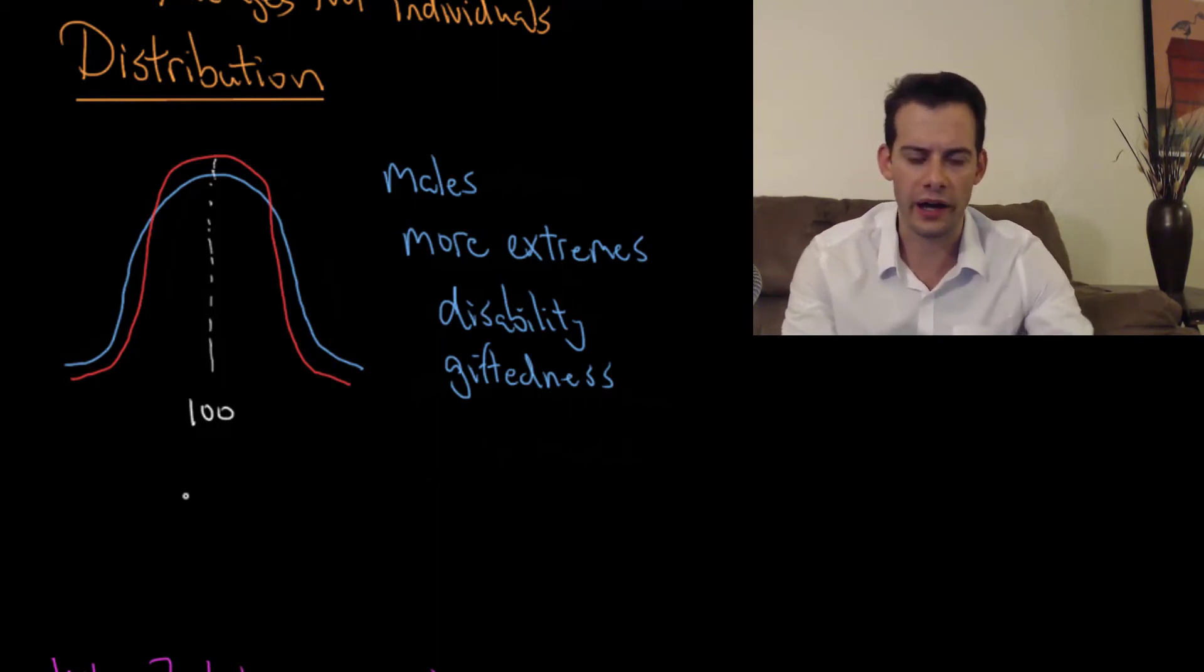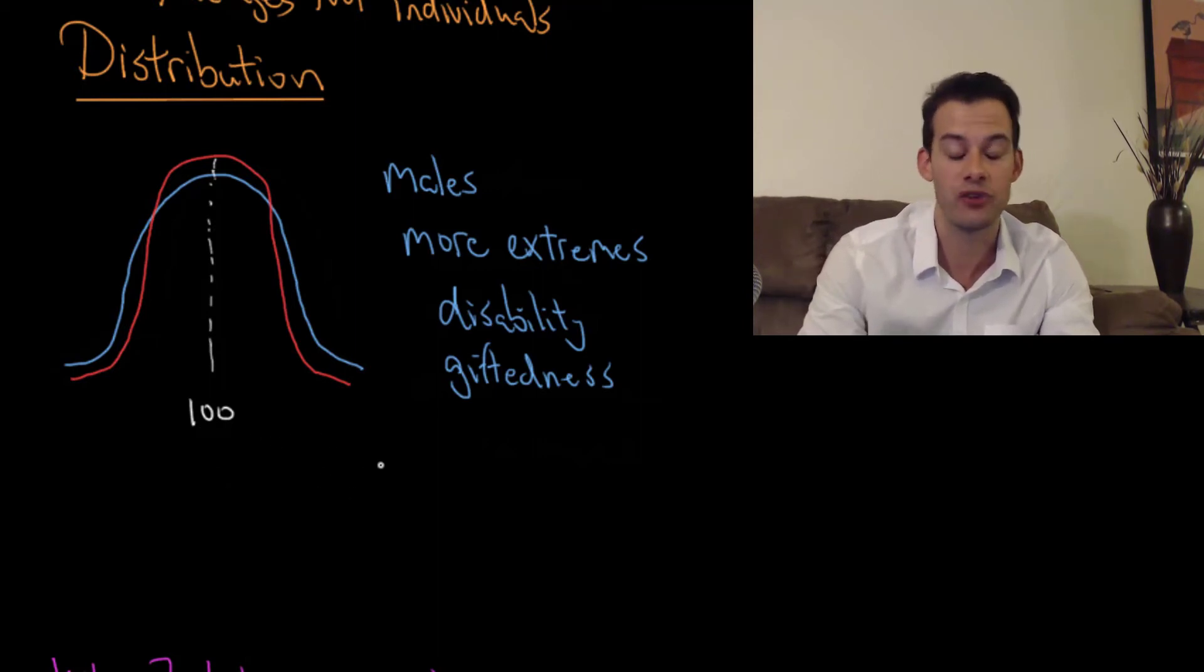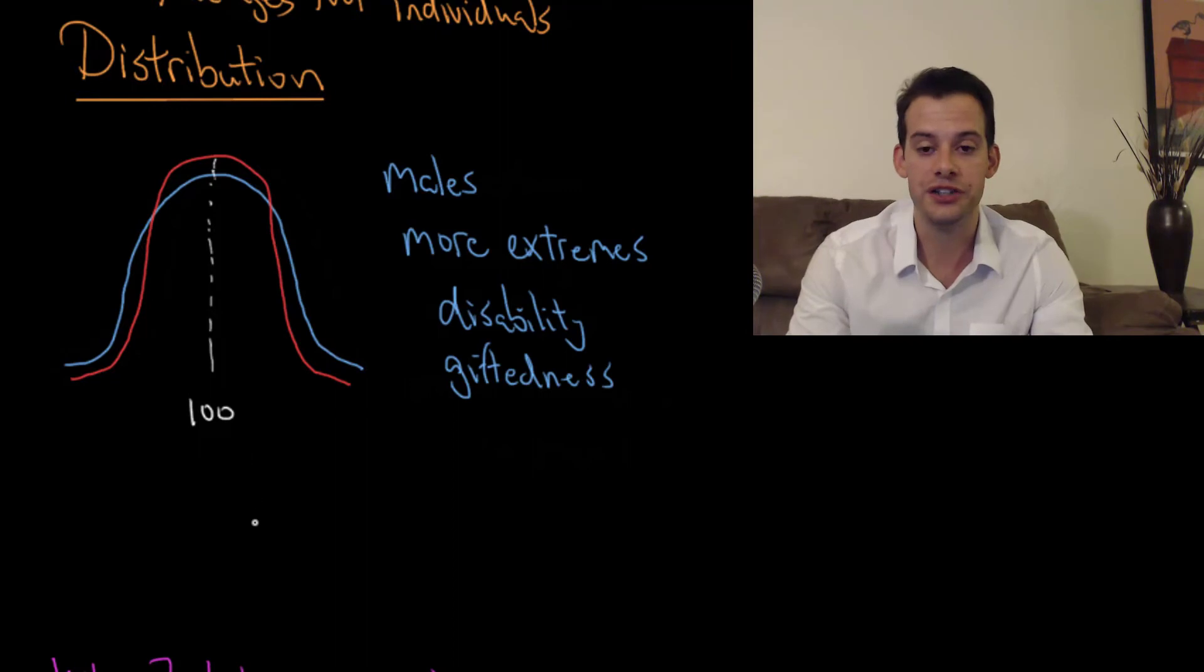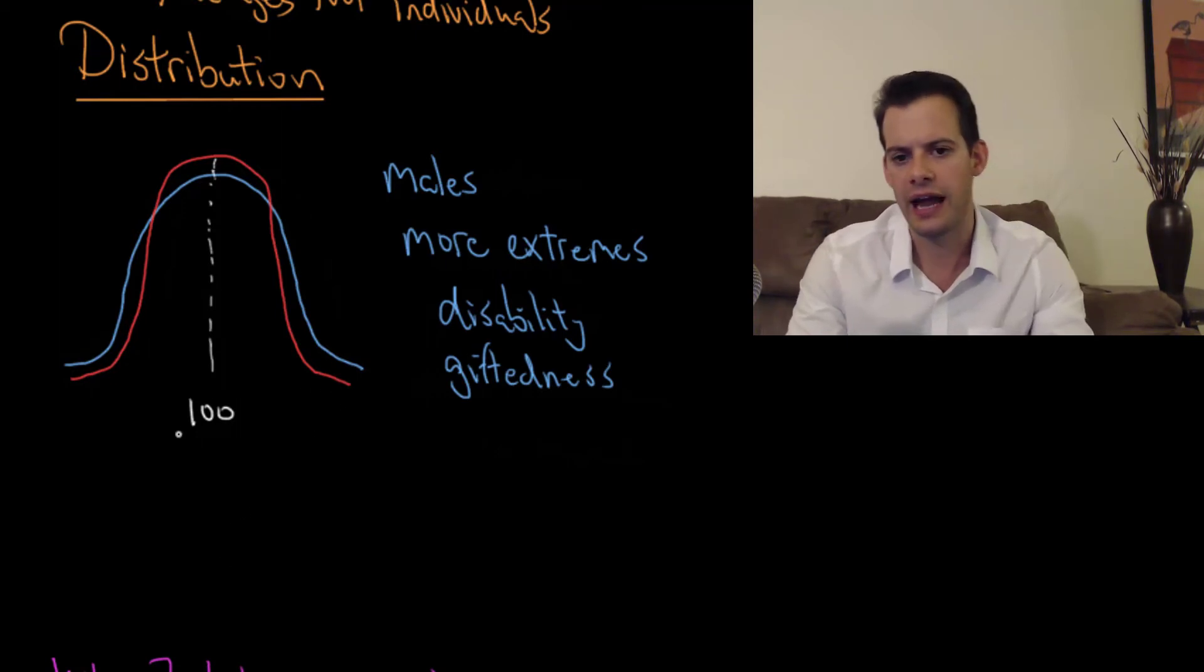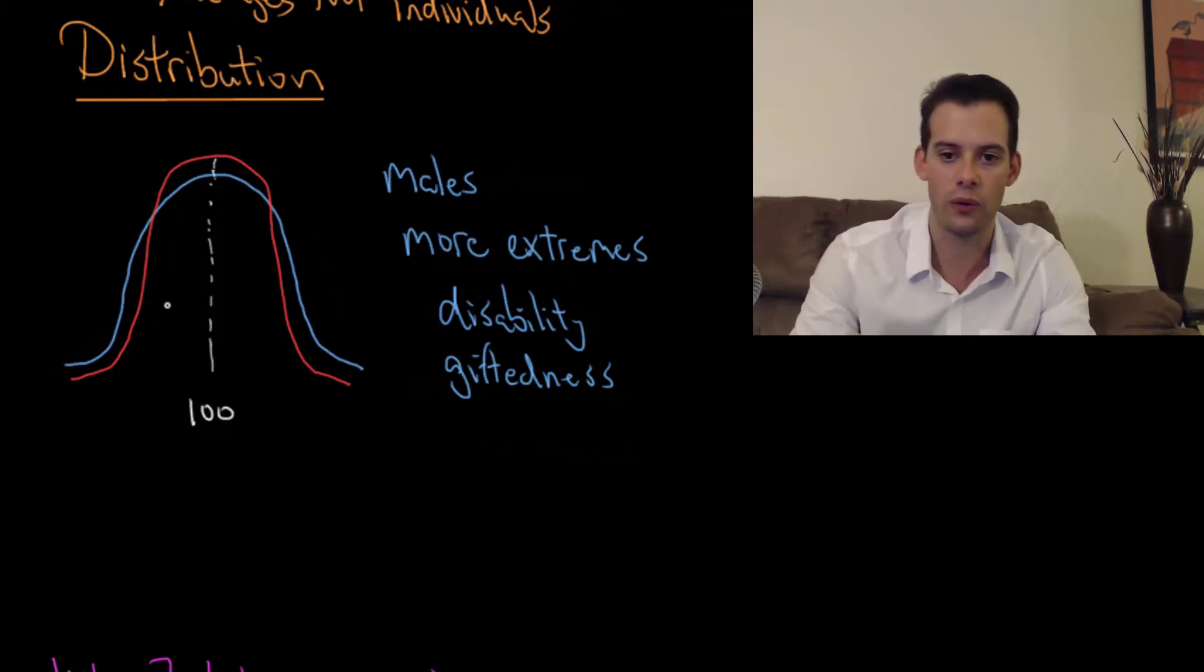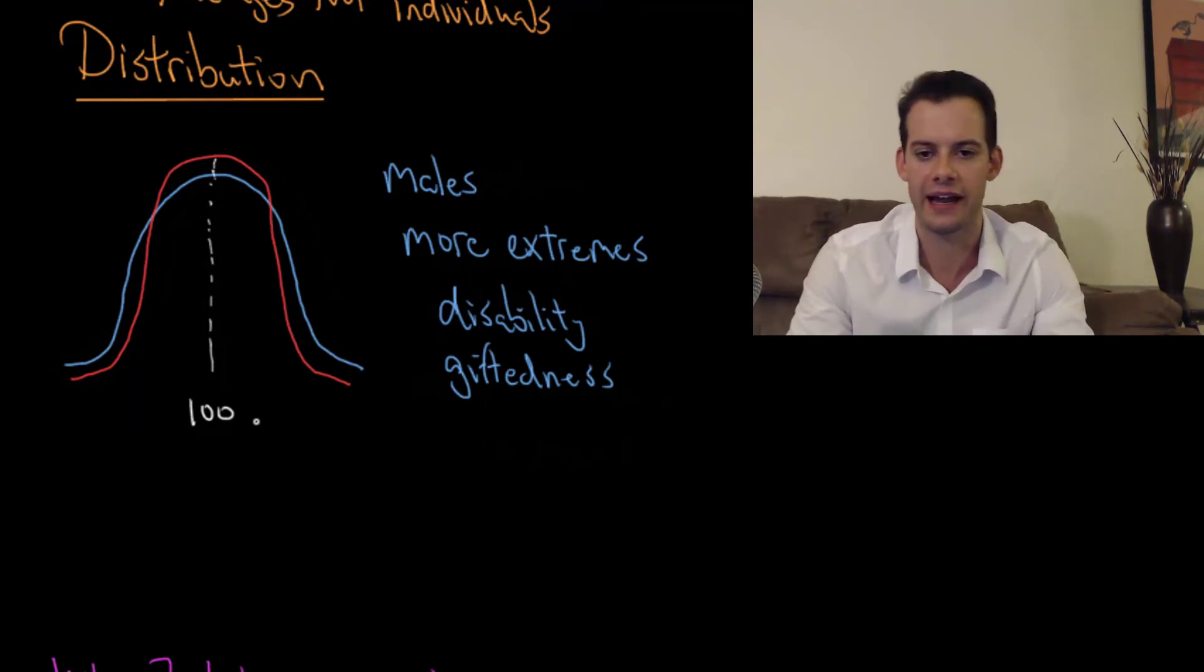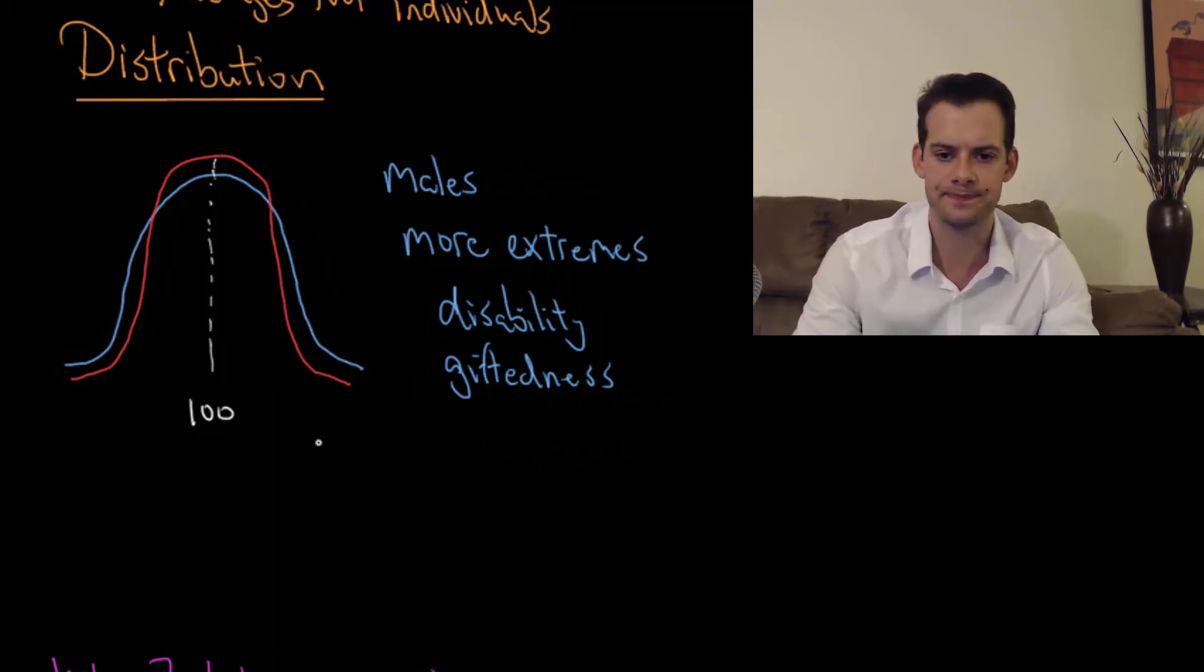Okay, so again, this is, remember, not about individuals. This is about groups. So just knowing that someone is male or female doesn't really tell you anything about their IQ, right? Because a female could be anywhere on this line and a male could be anywhere on this line. So you could obviously have females here who have higher IQs than the vast majority of males. And similarly, you can have females over here with lower IQ who are going to have lower IQs than most males or most other females in that case. And again, these lines are symmetrical, meaning that basically half of males and half of females are going to have IQs below average and half are going to be on the other side, above average.